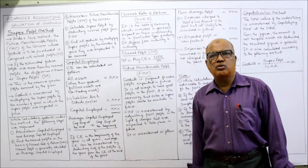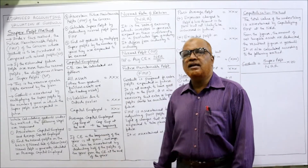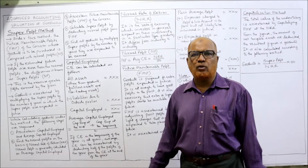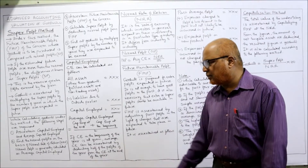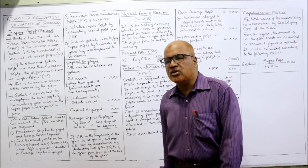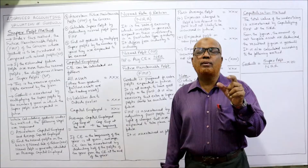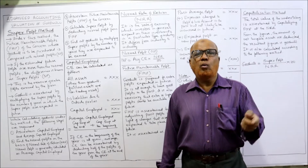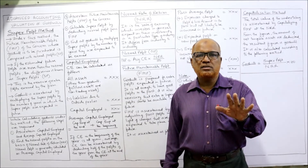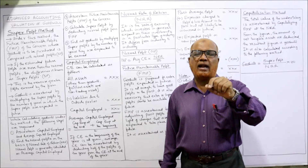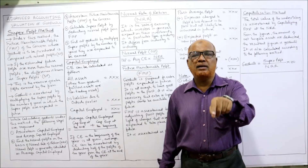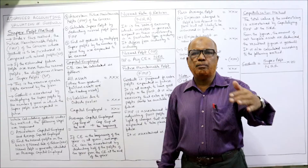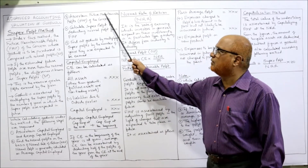While calculating goodwill under this method, the following steps are required. Step 1: Ascertain capital employed and average capital employed. Step 2: Find out the normal profit on the basis of the normal rate of return — normal profit is generally calculated on average capital employed by multiplying average capital employed with the normal rate of return (NRR). Step 3: Ascertain the future maintainable profit — how much profit the business will earn in the future.